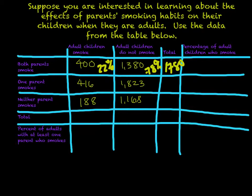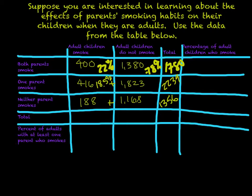We can do the same for the next group. The total here is 2,239. We calculate 416 divided by 2,239, which as a percentage is 18.5%. That means non-smokers in this group are 1,823 divided by 2,239, which equals about 81.4%.